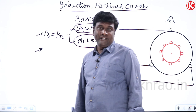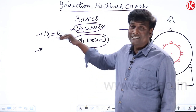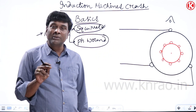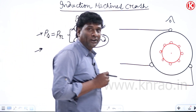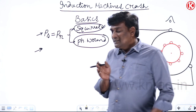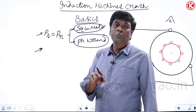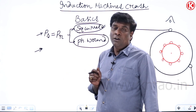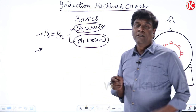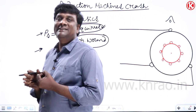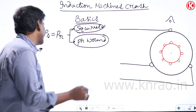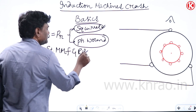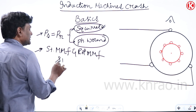The second condition for continuous electromagnetic torque: the stator MMF and rotor MMF must be stationary with respect to each other. For example, in an induction machine, if the stator MMF rotates at synchronous speed, the rotor MMF must also rotate at synchronous speed so they remain stationary relative to each other, producing continuous electromagnetic torque.